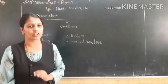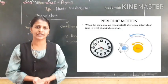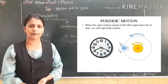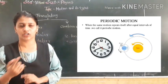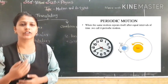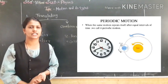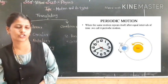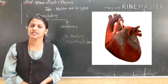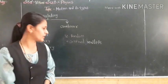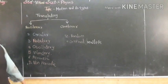Periodic motion means motion which repeats after an equal interval of time. For example, day and night occur at equal intervals of time — that is an example of periodic motion. Pumping of your heartbeats is also an example of periodic motion.